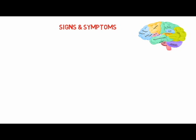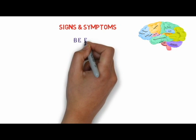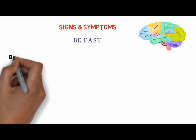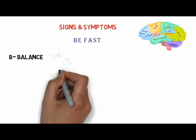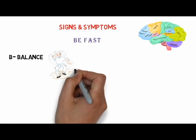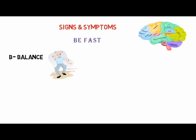As different parts of your brain control different parts of your body, your symptoms will depend on the part of your brain damaged and the extent of that damage. The main stroke symptoms can be remembered with the mnemonic BE FAST. B stands for Balance — sudden dizziness, loss of balance or coordination.